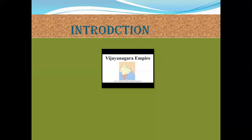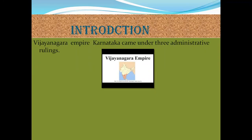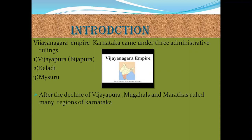Introduction: After the Vijayanagara Empire, Karnataka came under 3 administrative rulers — Vijayapura, Keladi, and Mysore. After the decline of Vijayapura, Mughals and Marathas ruled many regions of Karnataka. The main cause of the end of the Vijayanagara Empire was the Battle of Talikota.